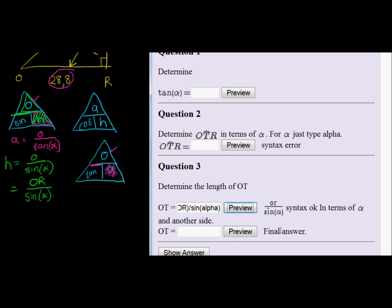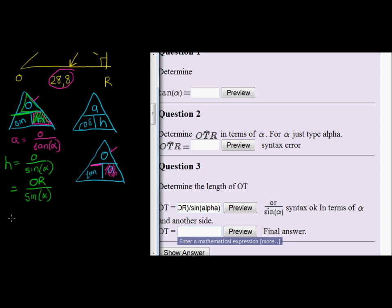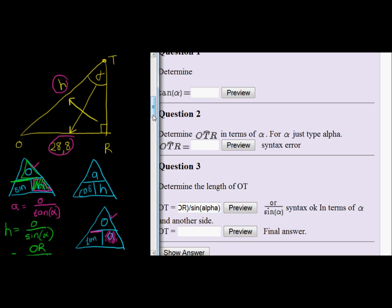And now we can go for the final answer. The final answer, OT, would be OR, which is 28.8, divided by sine of theta. Where are we going to get a value for sine of theta? Well, we can get it from our previous triangle because in this triangle we don't have enough information. We don't have opposite and hypotenuse. But in our previous triangle we do.